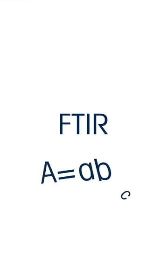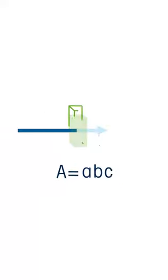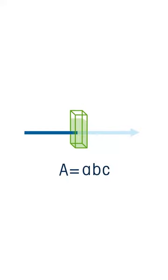FTIR follows the Beer-Lambert law, A equals ABC, where the molar absorptivity, A, and the path length, B, are essentially fixed and therefore constant.